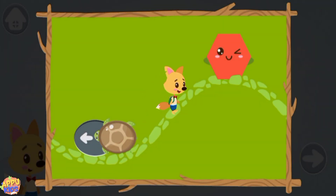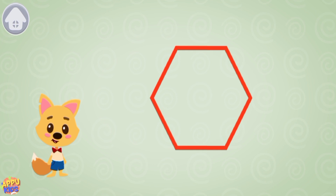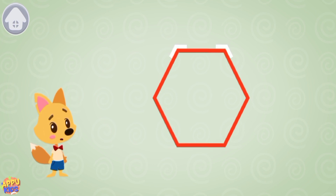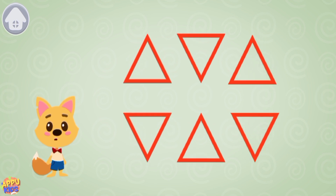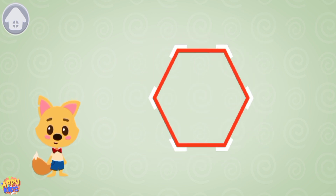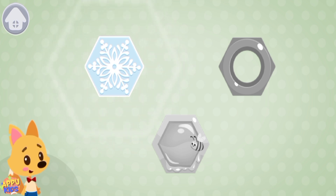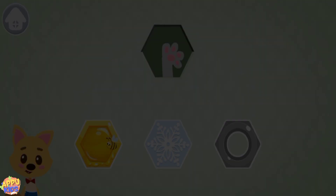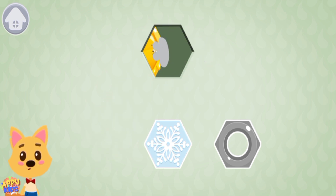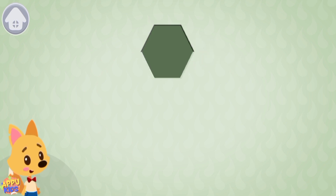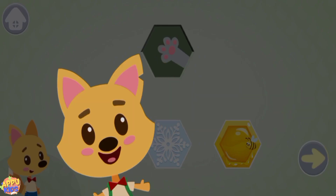This is a regular hexagon. It has six angles: 1, 2, 3, 4, 5, 6. All sides of the regular hexagon are equal. The regular hexagon is made up of six triangles. Tap on the hexagon. Tap on all the hexagon-shaped items: snowflake, honeycomb. Drag the hexagon-shaped items into the window above.